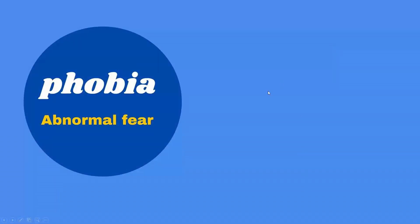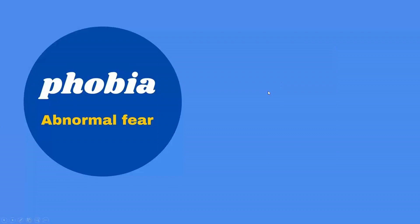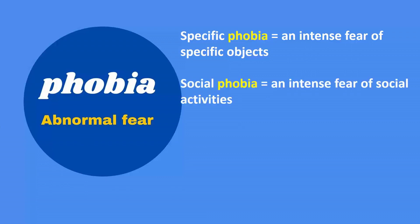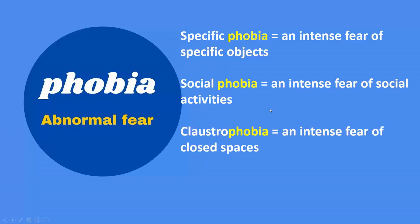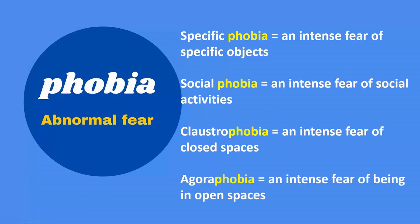Next, phobia means abnormal fear. Specific phobia is an intense fear of a specific object. Social phobia is intense fear of social activities. Claustrophobia is intense fear of closed spaces. Agoraphobia is intense fear of being in open spaces.